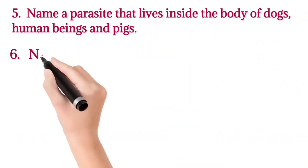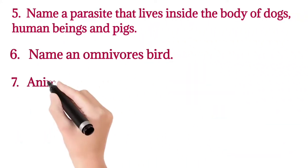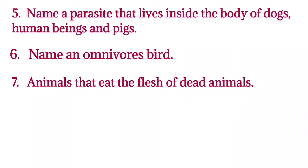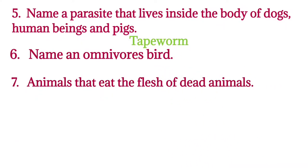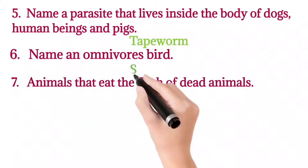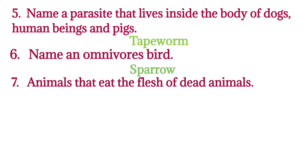Next: name a parasite that lives inside the body of dogs, human beings, and pigs. That is tapeworm. Sixth: name an omnivorous bird. Sparrow and crow are also omnivorous birds.